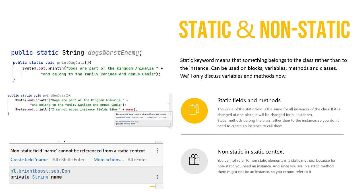So far we have seen static and non-static, but we didn't pay too much attention to it. So what does this static keyword mean? Well, it actually means that something — that could be a block, a variable, method, or class — belongs to the class rather than to the instance.